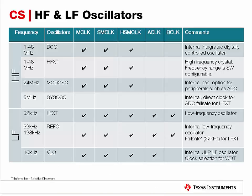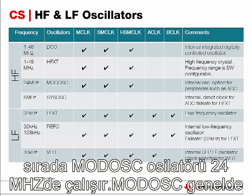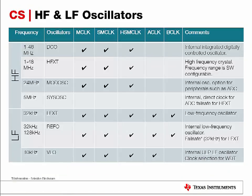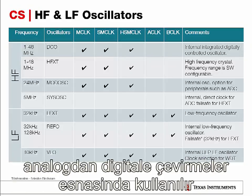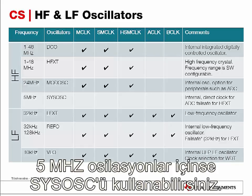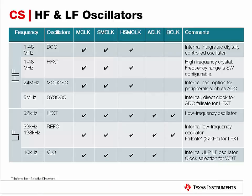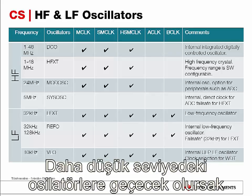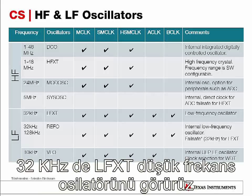Next, the MODOSS is an internal oscillator that can operate up to 24 MHz, and is really suitable for internal analog operations such as ADC or flash. The 24 MHz clock source is necessary to run the 1 MHz sample ADC. For lower frequency operation of the internal peripherals, you can also use a SISOSC, which is an oscillator that runs at 5 MHz.